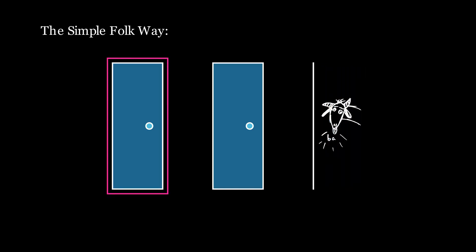Let's go over the two answers that we gave a little more closely. The simple folk way goes like this. You first pick a door and a goat door is revealed to you. You then stand there and think of whether to switch or not.